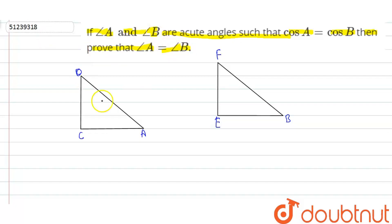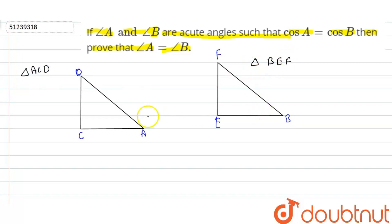So, let's suppose that there are two triangles. One triangle is triangle A, C, D. And the other triangle is triangle B, E, F. Angle A and angle B are acute angles, less than 90 degrees.